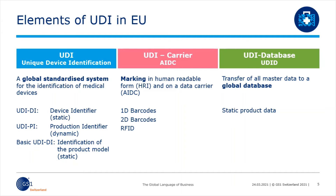Now that we have captured the parts of UDI, we will look at how this can be achieved using the GS1 system. With the GS1 system, you can uniquely identify your products, your services, your locations, and your service providers worldwide in an open value chain. How this system works and how it can be coupled with UDI, we will see on the following pages.